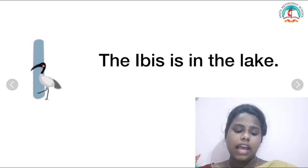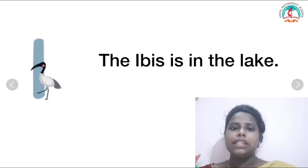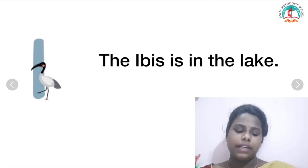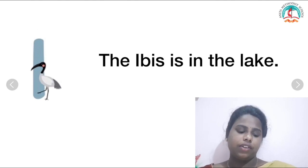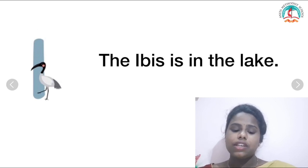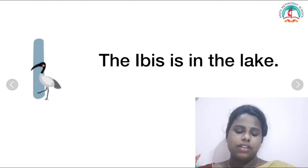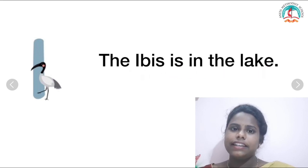I for ibis. Ibis is one kind of bird — like parrot and crow, it is also a kind of bird. Can you see the bird picture here? This bird is called ibis. Shall we read this? The ibis is in the lake. Once again — the ibis is in the lake. Very good.